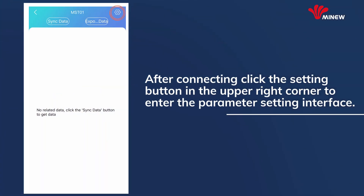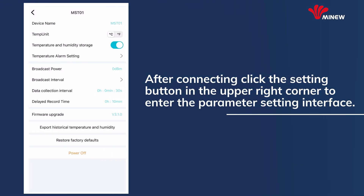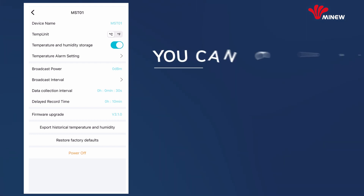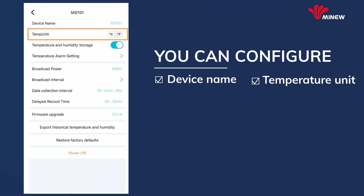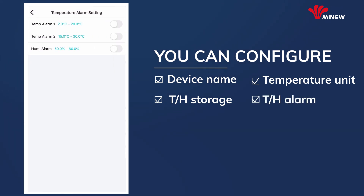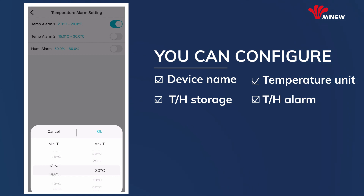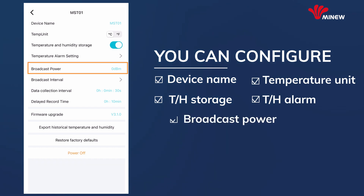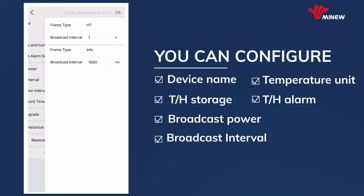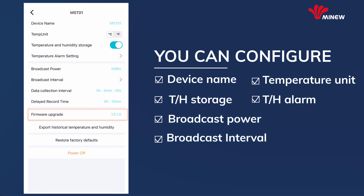After connecting, click the setting button in the upper right corner to enter the parameter setting interface. You can configure the device name, temperature units, temperature and humidity storage, temperature and humidity alarm, broadcast power, and broadcast interval, as well as firmware upgrade, at the parameter setting page.